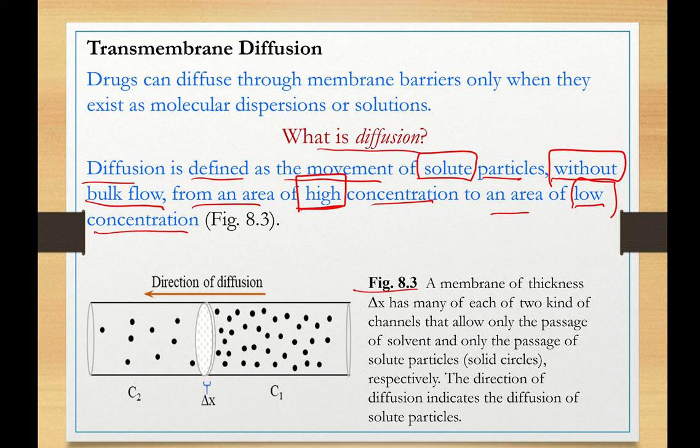In figure 8.3, I have included a schematic. The two solutions here, where C1 is greater than C2, are separated by a piece of membrane. The thickness of the membrane is delta x. This membrane contains two kinds of channels. The first one allows the passage of solute molecules. Solvent molecules are not shown here. The second kind of channels on the membrane allows the passage of solvent molecules.